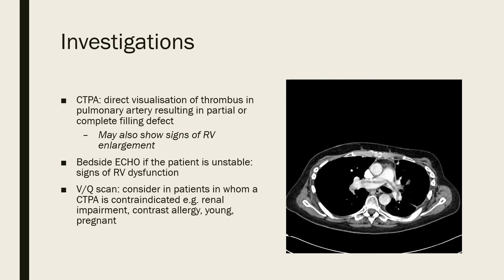The key diagnostic investigation is the CTPA. With a CTPA you get direct visualization of the thrombus in the pulmonary arteries, seen as a partial or complete filling defect, and you may also see signs of RV enlargement. In this image you can see a large saddle embolus. If the patient is unstable, a bedside echo may aid diagnosis and show signs of right ventricular dysfunction. A VQ scan can be considered when CTPA is contraindicated — in those with renal impairment, contrast allergy, or the young and pregnant.